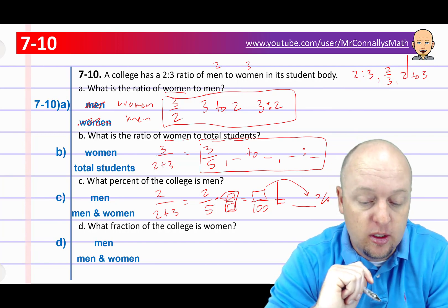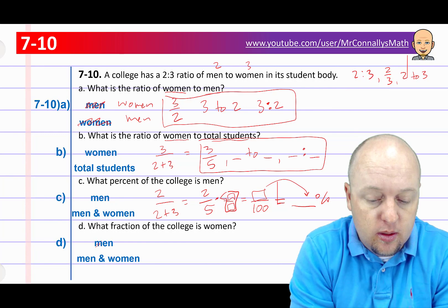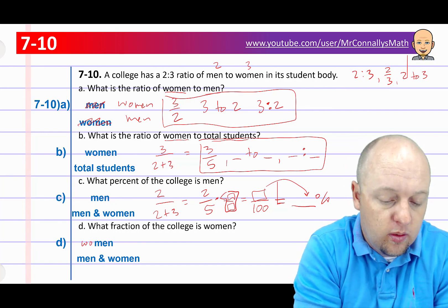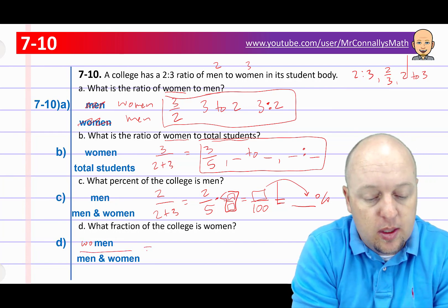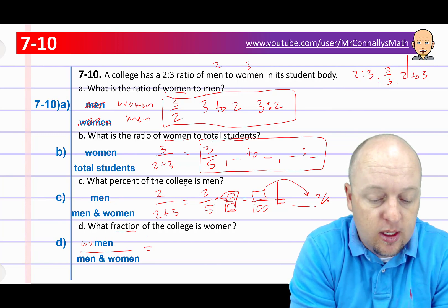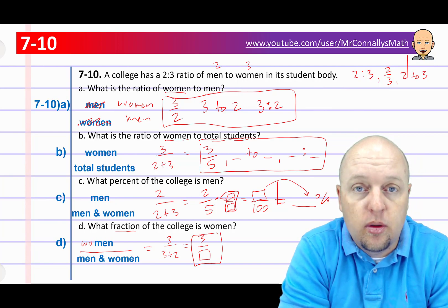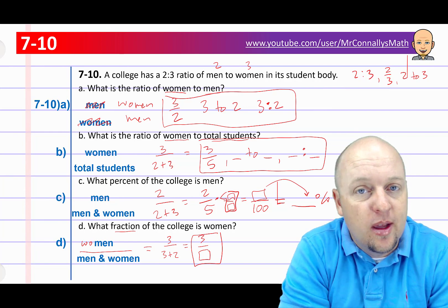Part D: what fraction of the college is women? We can get this one easily — it's just asking for a fraction, not percent, so we don't have to do that extra step. Women would be represented by the 3, and 3 plus 2 is total students, so it's 3 over 5. That's all we need to do — women is 3 over 5 as a fraction. Pause if you need more time.